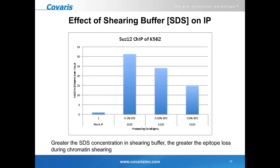Shearing buffer also has an effect on IP. DNA chromatin was sheared using varying SDS concentrations and then an IP was performed using USF2 transcription factor. If you shear with a greater SDS concentration, you solubilize more of your epitope, so your enrichment is significantly reduced. The less detergent you use in your shearing buffer, the greater the amount of epitope available for IP.